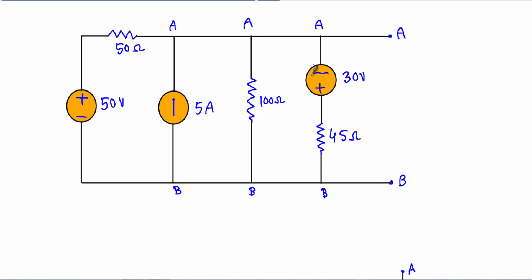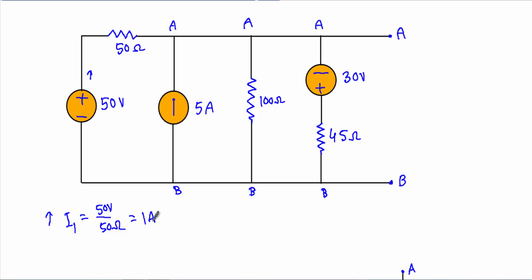I will convert each of the voltage sources into a current source with a parallel resistance. This is a voltage source of 50 volt with a resistance of 50 ohm, therefore current I1 will be equal to 50 volt divided by 50 ohm, which equals 1 ampere. This will supply current in the upward direction, and I will connect a resistance of 50 ohm in parallel with I1.